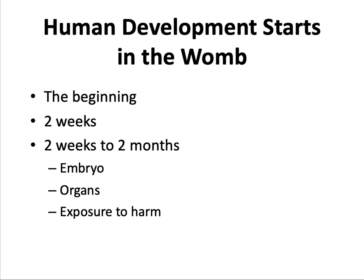Human development starts in the womb. The process begins at the moment of conception, when sperm unites with the egg to create a zygote, the first cell of a new life. At two weeks, the zygote is firmly implanted in the uterine wall and the next stage of development begins. From two weeks to two months, the developing human is known as an embryo. The organs and internal systems begin to form, and exposure to harm such as toxins, drugs, extreme stress,